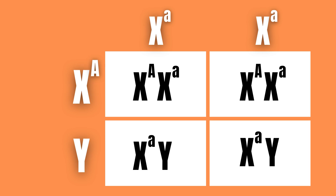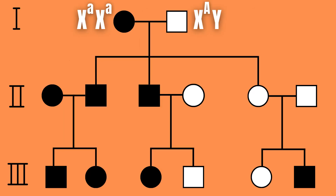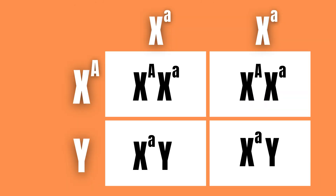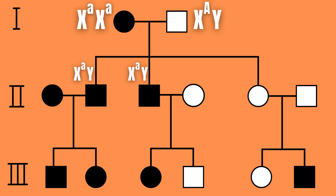This means that all their sons will get their one X chromosome from the mother, which is recessive, meaning that they will also be affected. All daughters will get one allele from each parent and will therefore be unaffected carriers.